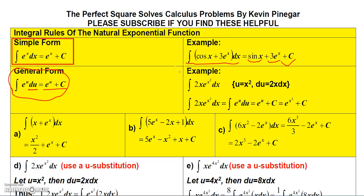In this example we have the integral of 2x·e^(x²) dx. Since I have e raised to a function of x, I'll let u be x², so du is 2x dx. The 2x and dx together form du, and e^(x²) becomes e^u.